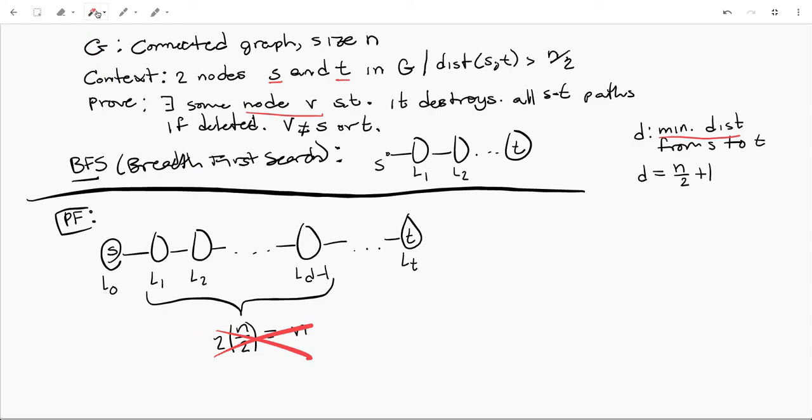That means there is at least one layer that only has one node in it. And let's just say that it's this layer, LD minus 1. We don't know that it is, but just for the sake of simplicity, let's say V is the only node in LD minus 1.